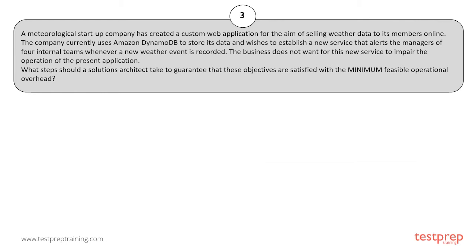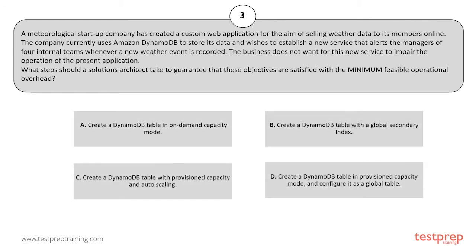Your options are: A. Create a DynamoDB table in on-demand capacity mode. B. Create a DynamoDB table with a global secondary index. C. Create a DynamoDB table with provisioned capacity and auto-scaling. D. Create a DynamoDB table in provisioned capacity mode and configure it as a global table.